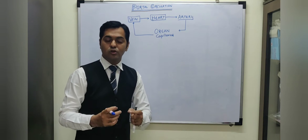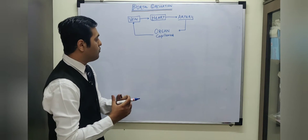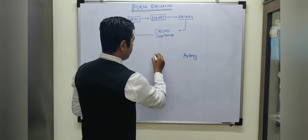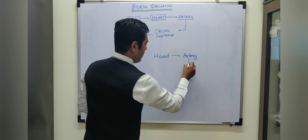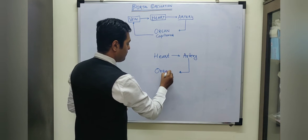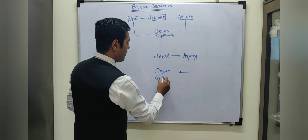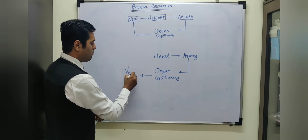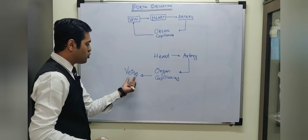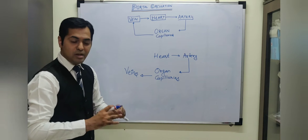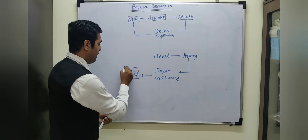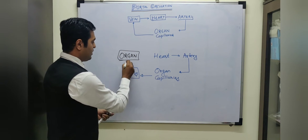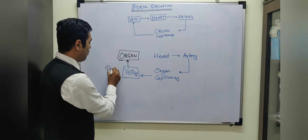Now let us understand the concept of portal circulation. In portal circulation, an artery carries blood away from the heart and takes it to an organ. As we discussed, the artery divides to form capillaries, and then capillaries unite to form the veins. This vein should be carrying the blood towards the heart, but instead, if a particular vein carries the blood to another organ instead of carrying it to the heart, then this vein is known as the portal vein.